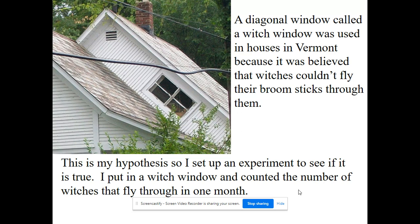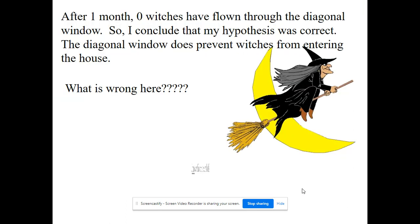Why is a control important? In Vermont, they used to make windows at a diagonal called witch windows — the idea being that witches couldn't fly through them. If you set up an experiment, count zero witches flying through your witch window, and conclude it worked, you'd be wrong — because you didn't have a control. You'd need to compare your witch window to a normal window, and you'd find zero witches flew through both.